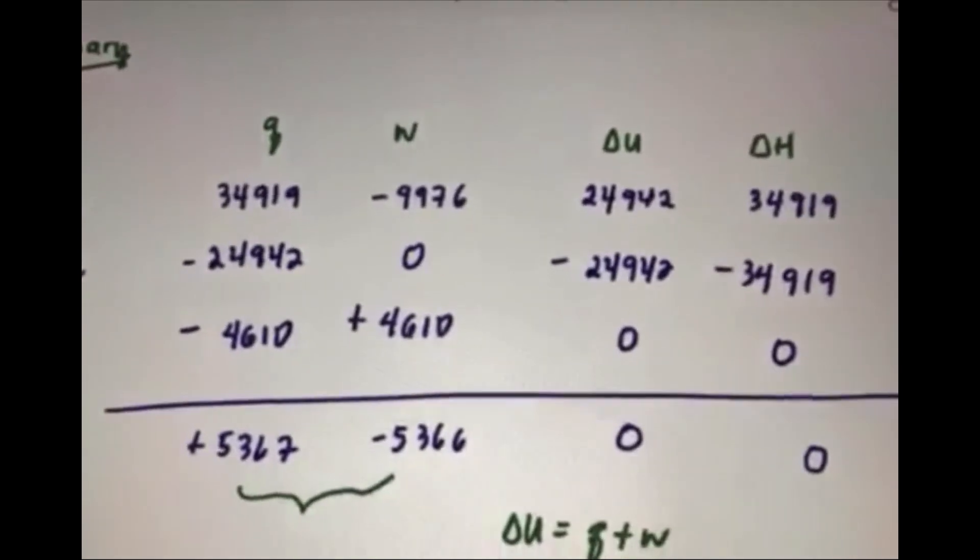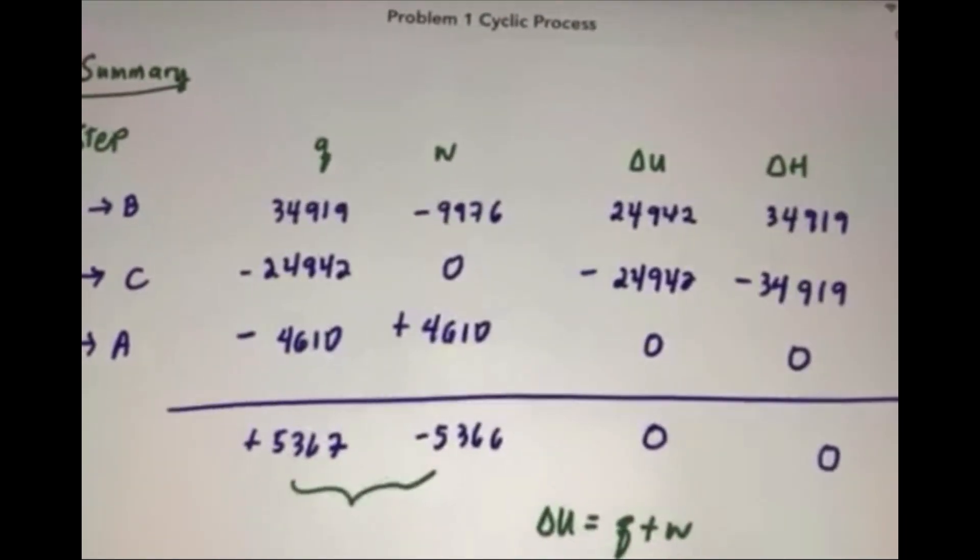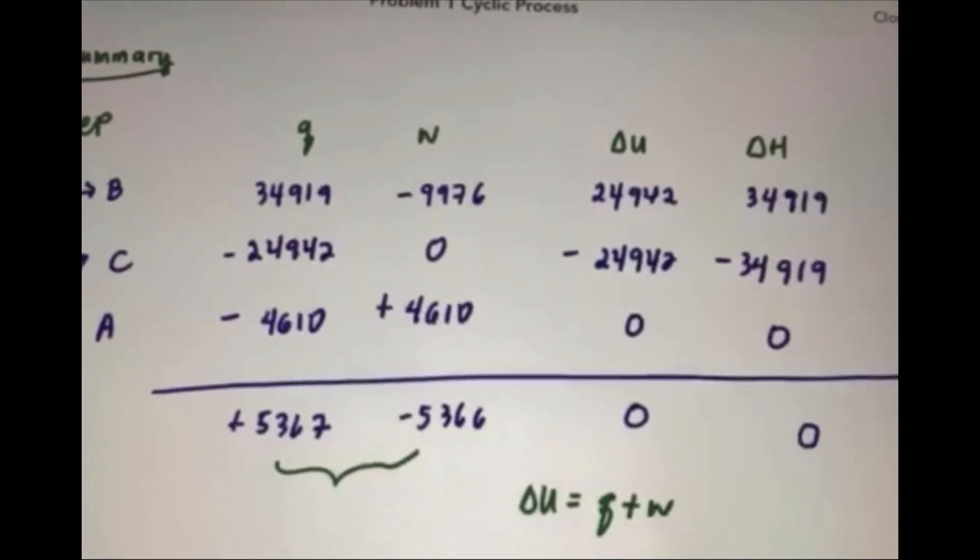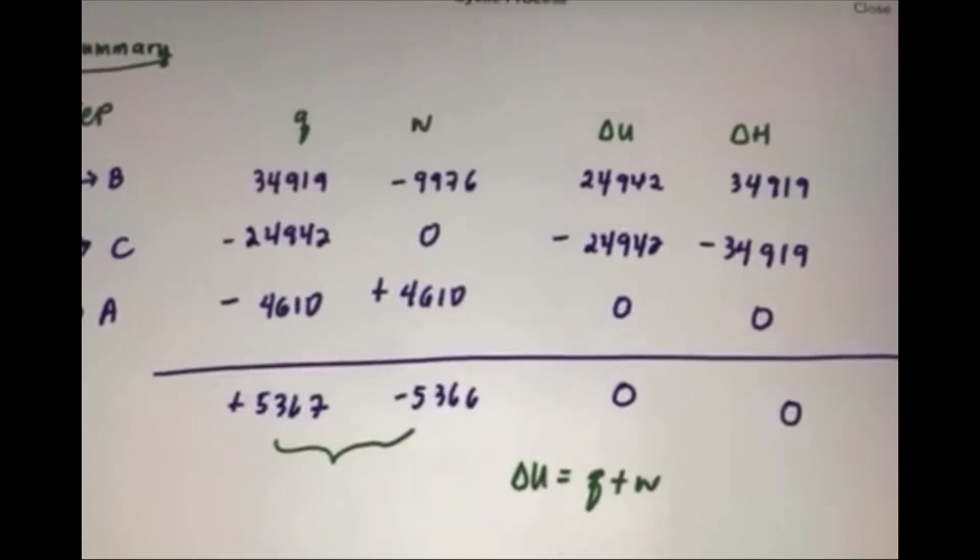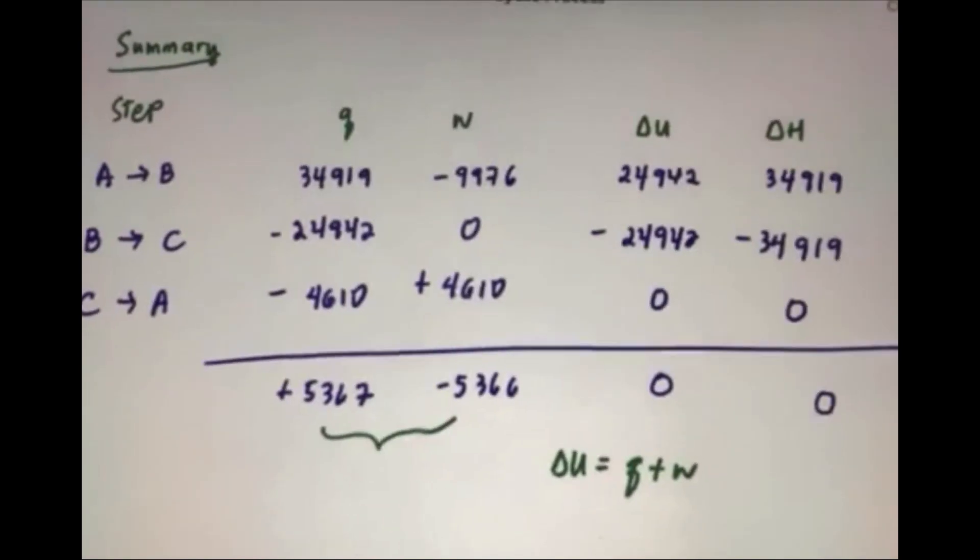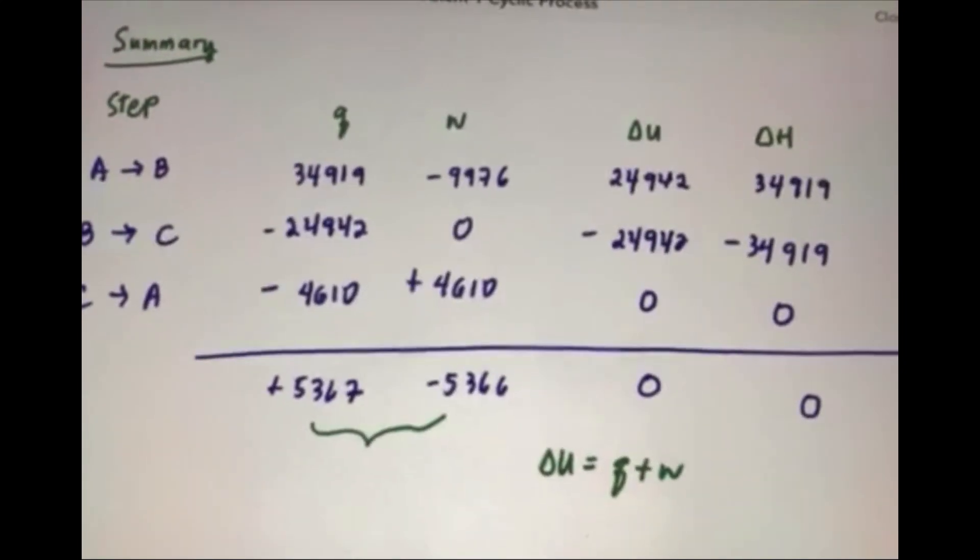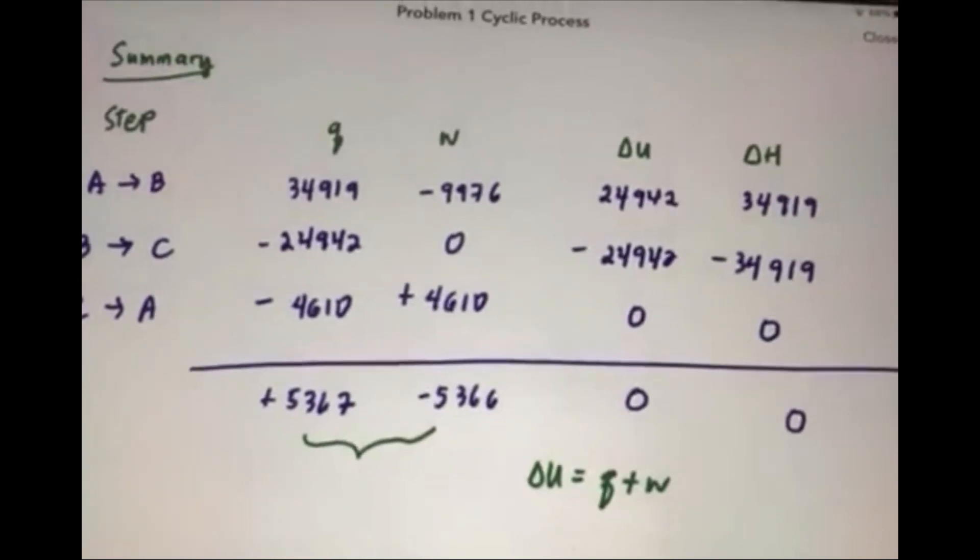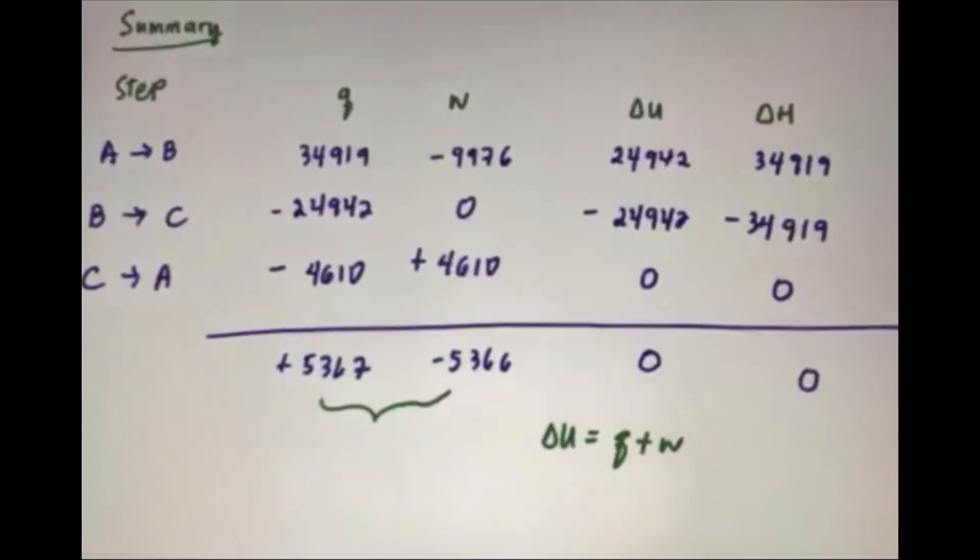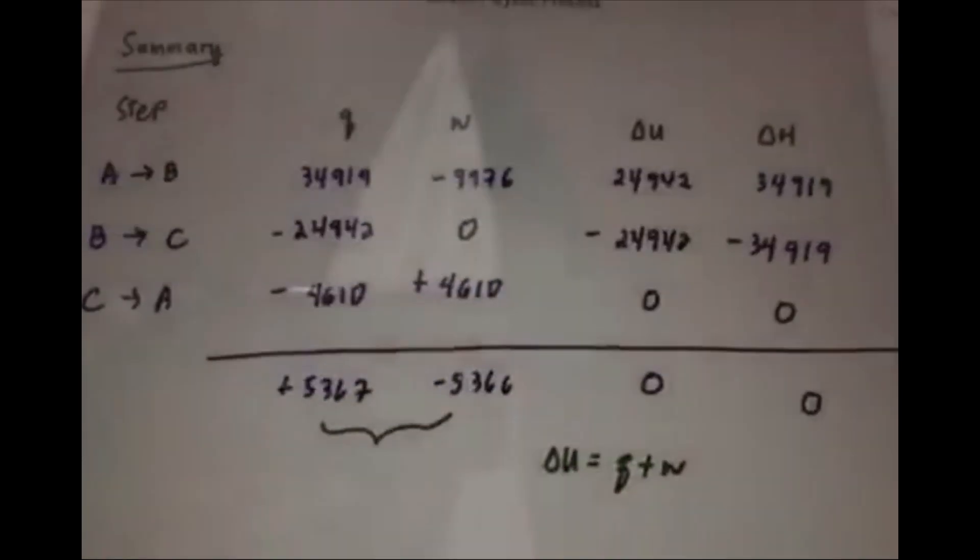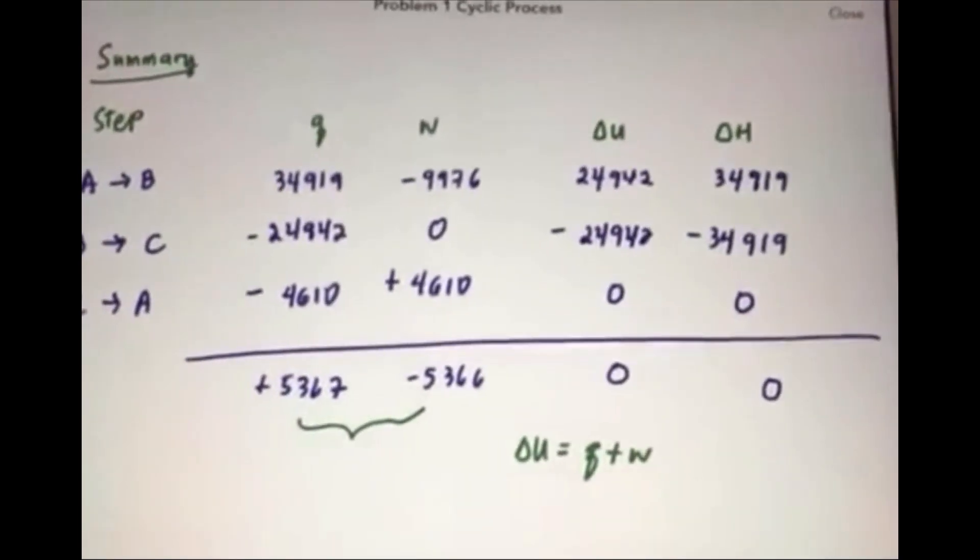And c to a, it's an isothermal process, delta u equal to delta h equal to 0. Q is equal to negative 4,610 joules, while work is equal to positive 4,610 joules. Then for an overall, delta u and delta h, we got obviously 0 since it's a cyclic process. And it should also conform to the first law, delta u is equal to q plus work. But in this case, in our problem, we have a discrepancy, slight difference of 1 joule, maybe in our rounding of values, as we get from each process. But still, from our solution, this conformed to delta u equal to q plus w, which is following the first law of thermodynamics.